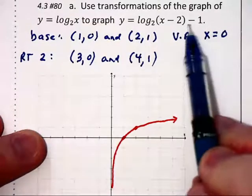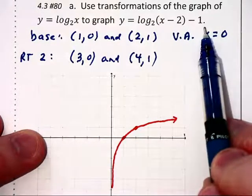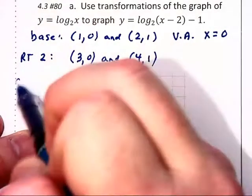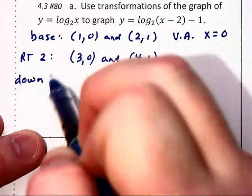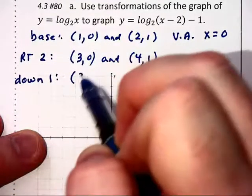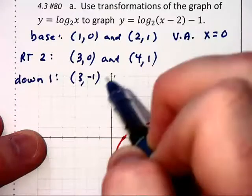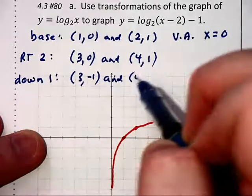Then we have a transformation over here with that minus 1 that tells us the graph goes down 1. So here we go, down 1, that'll give me 3, negative 1, and 4, 0.